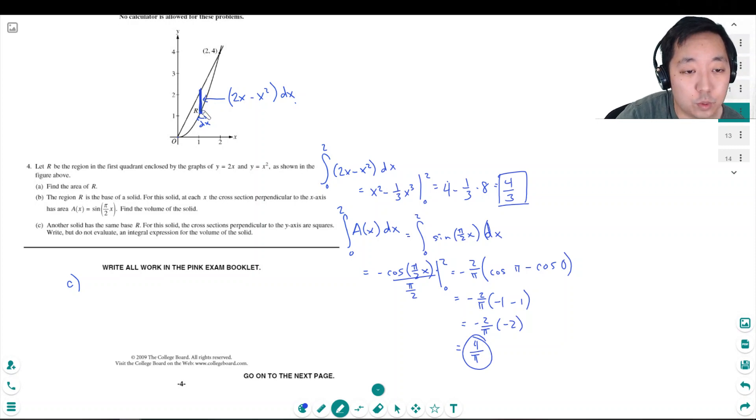So this is one side of a square. The area of that square would be (2x minus x squared) squared, right? The side squared is the area of the square, because this is one side. And then I multiply by the thickness of that square to get the volume of that little square prism. And I'm gonna integrate from 0 to 2. I'm gonna add up all those little prisms from x equals 0 to x equals 2.